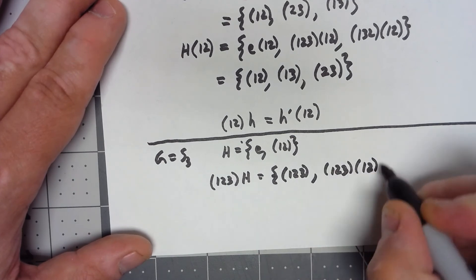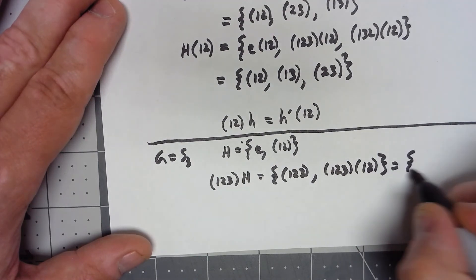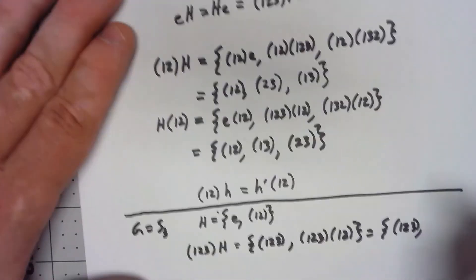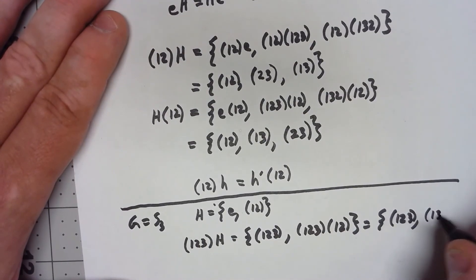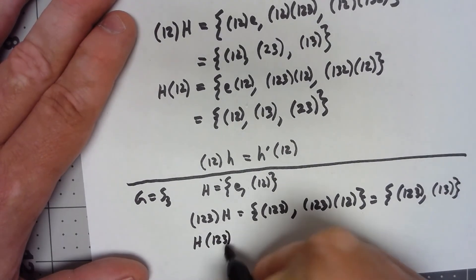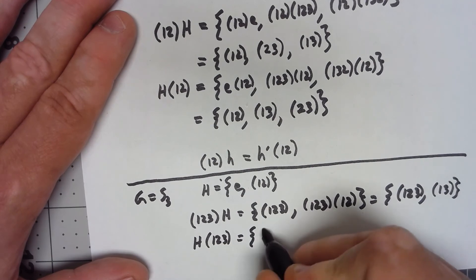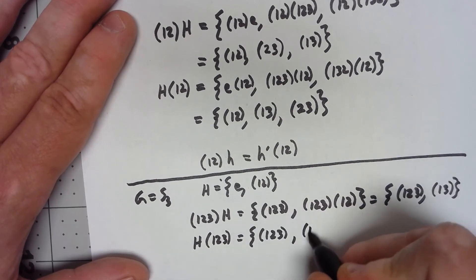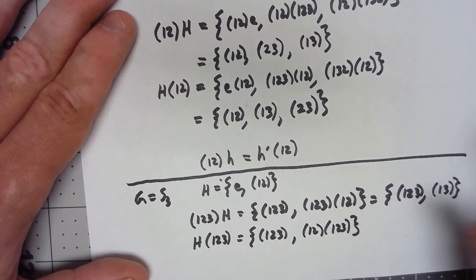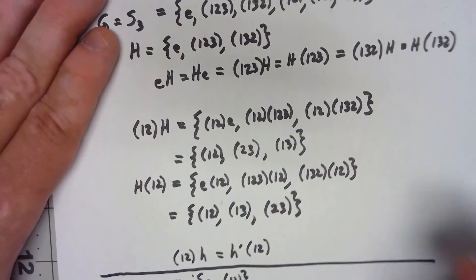So that's (1,2,3), and (1,2,3)(1,2) we actually just computed right there as being (1,3). On the other hand, if I do H(1,2,3), look at the right coset, I get (1,2,3) times the identity, and I get (1,2) times (1,2,3), and we did (1,2) times (1,2,3) there gives me (2,3).